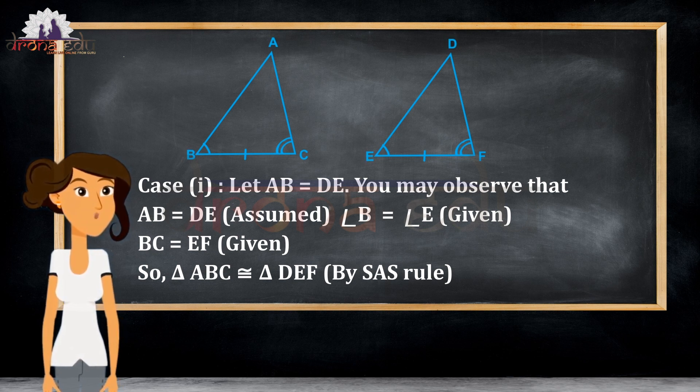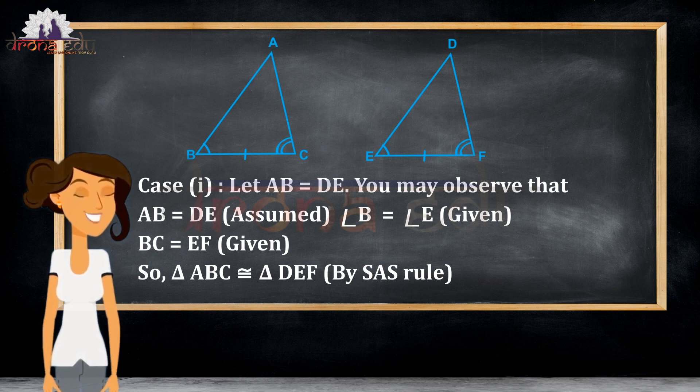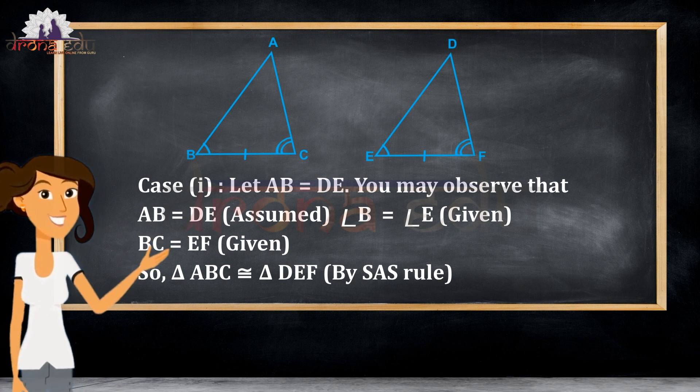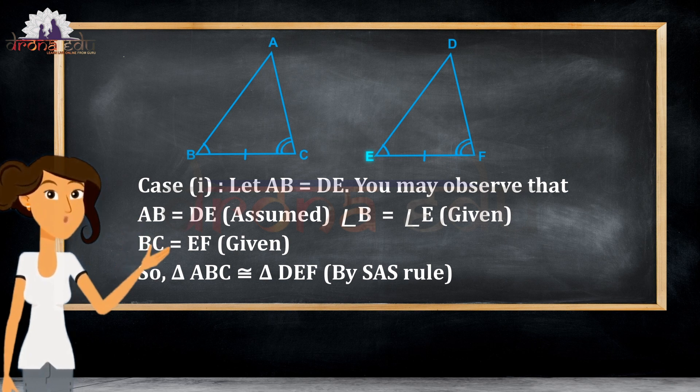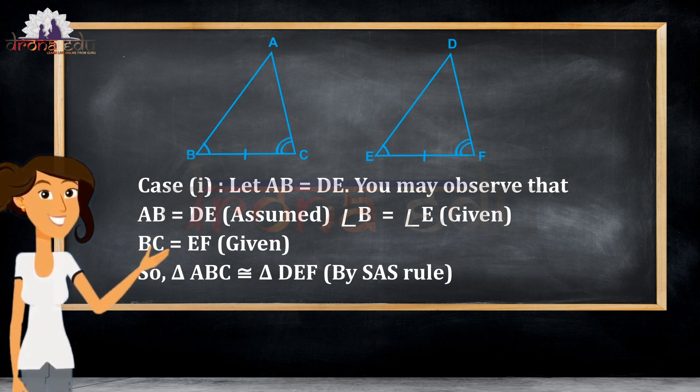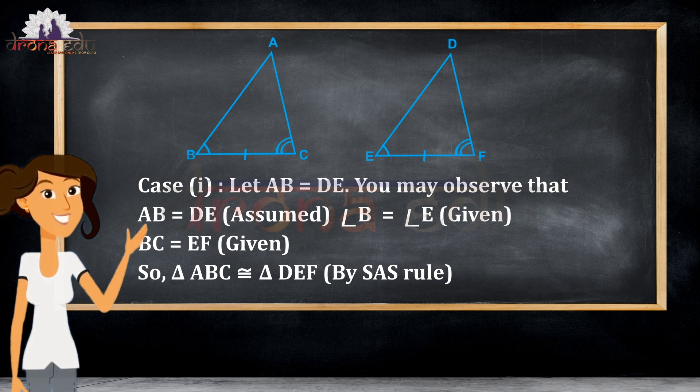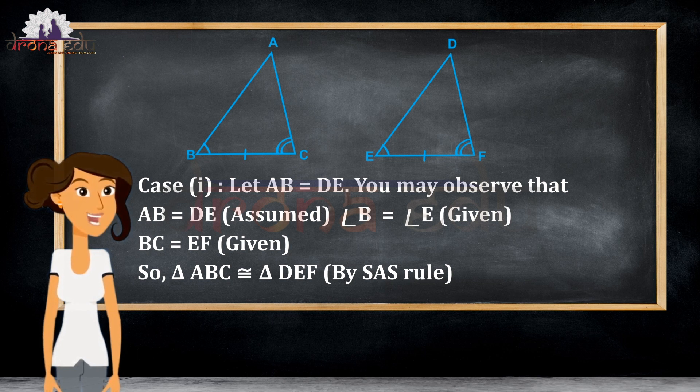You may observe here that I can take AB equals DE from this diagram, which is already assumed. We are already given that angle B equals angle E, and BC equals EF. Since two sides are equal and one angle is the same, I can say that triangle ABC is congruent to triangle DEF by SAS rule. This is the first case.